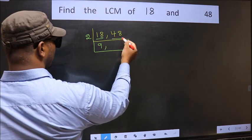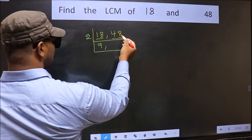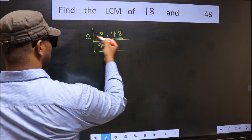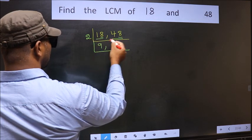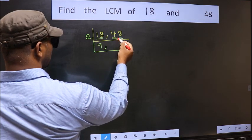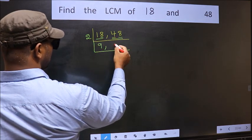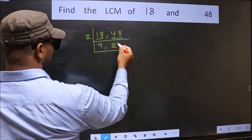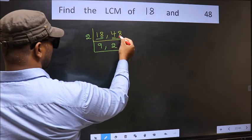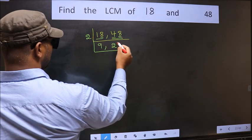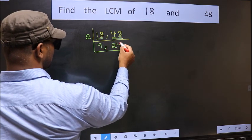The other number 48 — last digit 8 is even, so this is divisible by 2. First number becomes 4. When do we get 4 in the 2 table? 2 twos 4. The other number is 8. When do we get 8 in the 2 table? 2 fours 8.